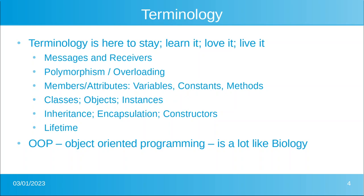You have polymorphism, also called overloading — though technically not the same thing. Polymorphism means having many aspects. Then you have members or attributes, usually in three types: variables, constants, and methods. Then you have classes, objects, and instances, followed by inheritance, encapsulation, and constructors.